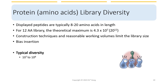Typically, phage-displayed protein libraries are designed to have a diversity of at least 10 to the 7th to 10 to the 8th variants, which is sufficient to cover a significant portion of the sequence space for most protein families.